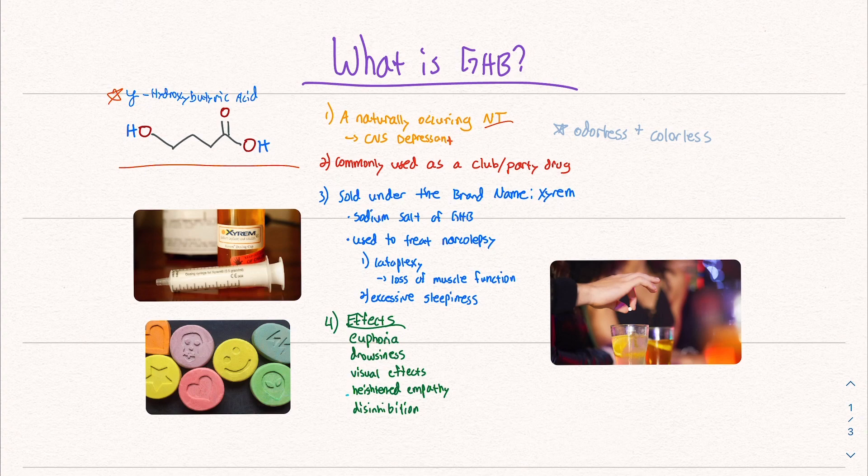Neurotransmitters are the molecules that the brain and nervous system use to transmit signals. It is a central nervous system depressant, meaning a compound that produces a relaxation effect in the body like alcohol or Xanax. It is odorless and colorless.